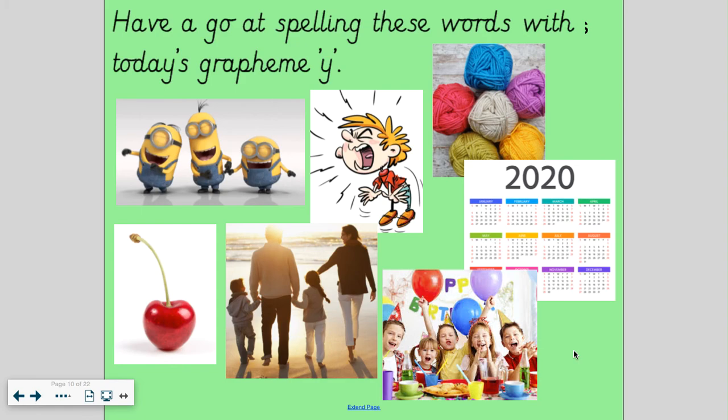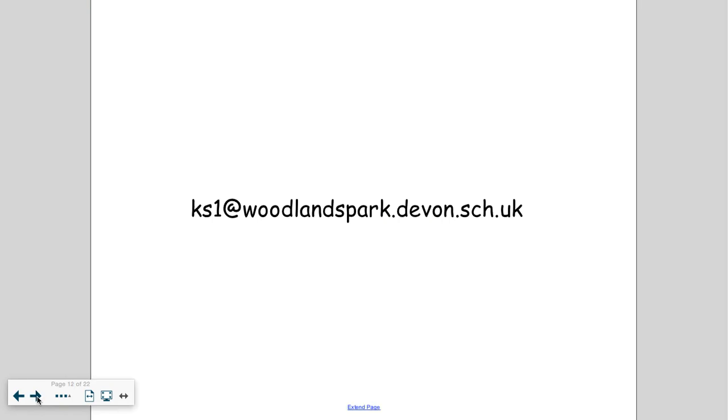So that is your activity today. You might need to rewind the video if you can't remember what the words are you need to spell. Have a go at writing these down by sound talking them and then representing each sound with a grapheme. Just like we did in our activity at the beginning. Don't forget, if you'd like to send us any of your home learning, then you can do so by sending it to the email address here. Until next time, take care and we'll see you again soon. Bye bye.